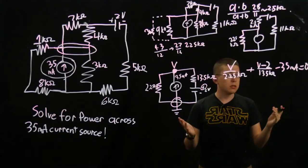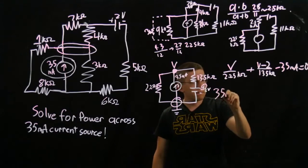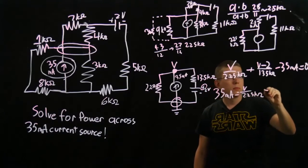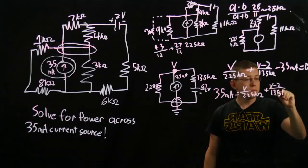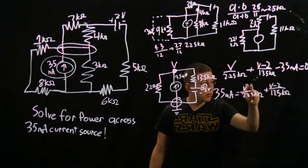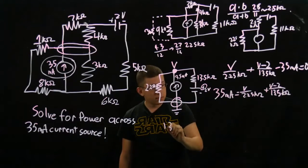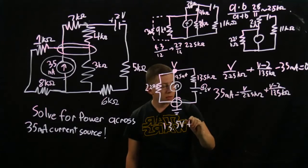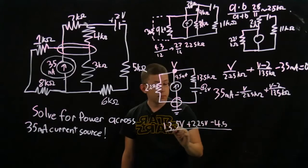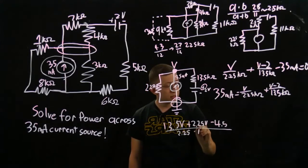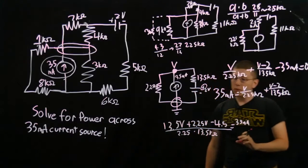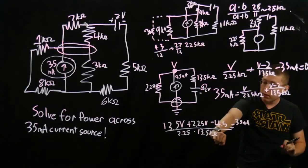Now we have an equation in terms of one variable. I'll bring the 35 milliamps over to the other side: equals V over 2.25k ohms plus V minus 2 over 13.5k ohms. From here on out it's just simple algebra. I'm going to multiply through, so it'll be 13.5V plus 2.25V minus 4.5, all over 2.25 times 13.5. From here we multiply both sides by 2.25 times 13.5.